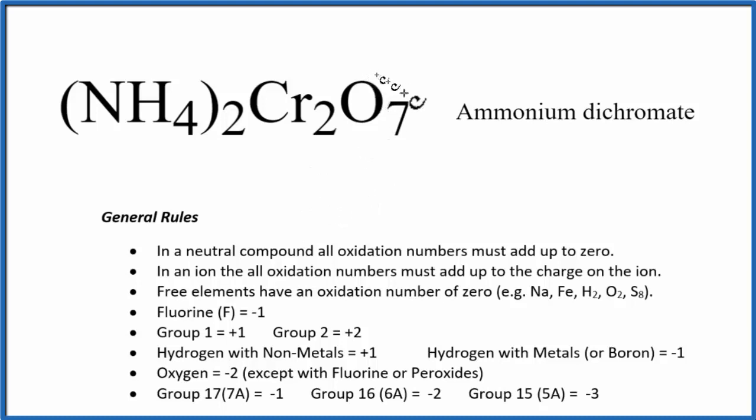First thing, we have a neutral compound here. We don't have a plus or minus charge after it. In a neutral compound, everything is going to add up to zero. That's good to know. We also know if we have an ion, all the oxidation numbers add up to the charge on the ion. And we have two ions here.